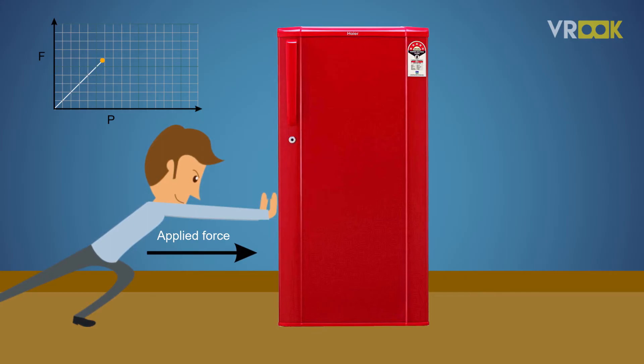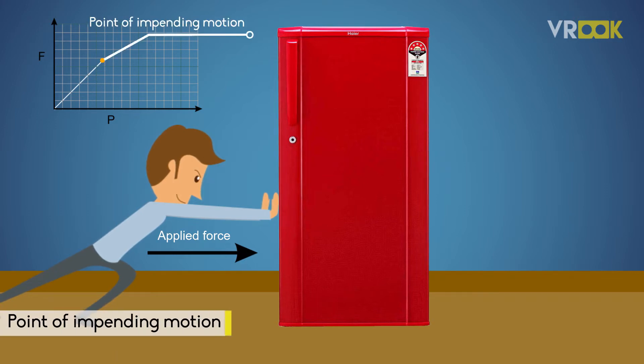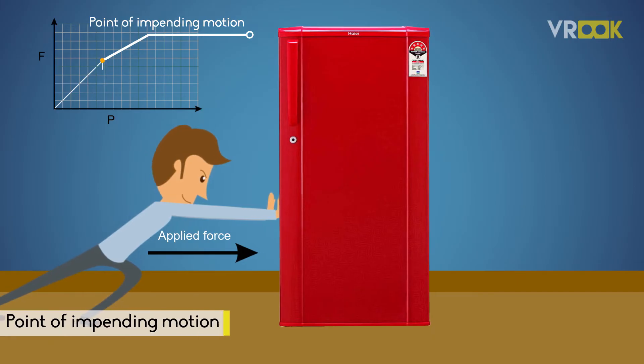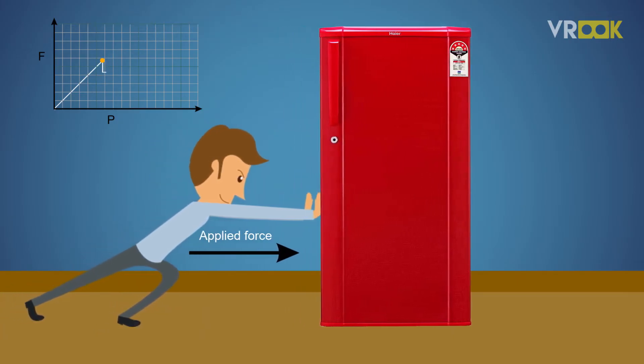The fridge is about to move from its static position. This point is known as the point of impending motion. If the force is increased a tiny bit, the fridge will start to move.